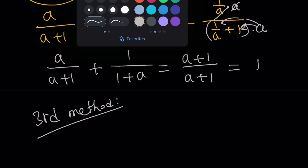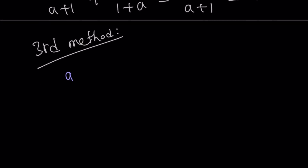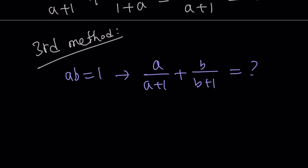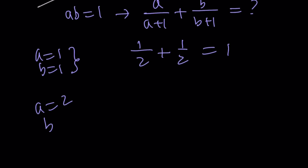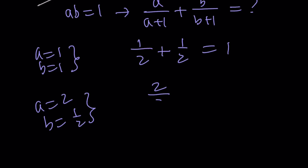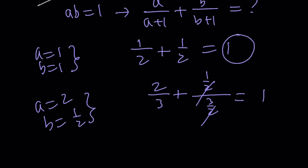The third method involves something many people use for these kinds of questions, especially on multiple-choice tests or competitions like AMC 8 or AMC 10: just use specific numerical values, as long as you don't violate the rules — so don't use a equals negative 1. Try a equals 1 and b equals 1: their product is 1, so it works. You get 1 half plus 1 half equals 1. Then try a equals 2 and b equals 1 half: 2 over 3 plus (1/2)/(3/2) equals 2 thirds plus 1 third equals 1. You can try millions of pairs and always get 1, confirming that is the constant answer.